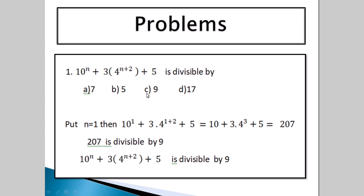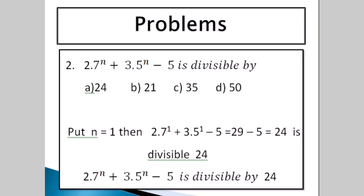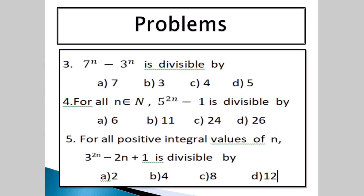Now let's say 10 to the power of n plus 2 into 7 to the power of n plus 3 into 5 to the power of n minus 5 is divisible by 24, 21, 35, or 50. Same procedure: put n equals 1. The total sum gives 24, and 24 is divisible by 24. Therefore the given expression is divisible by 24.